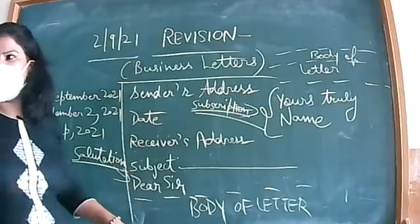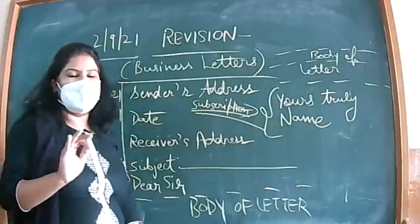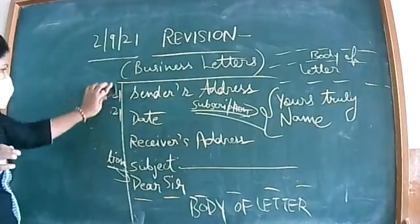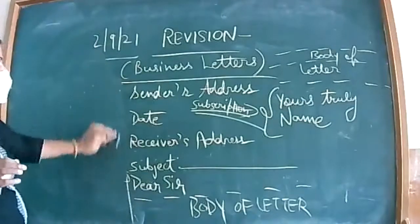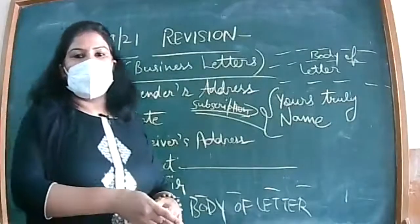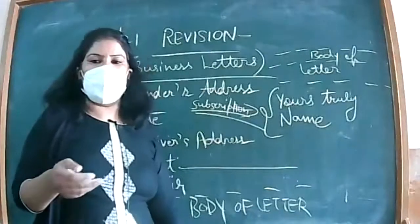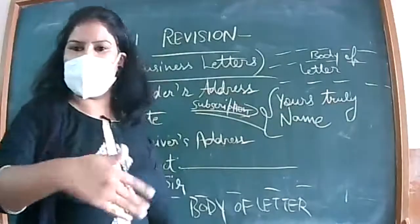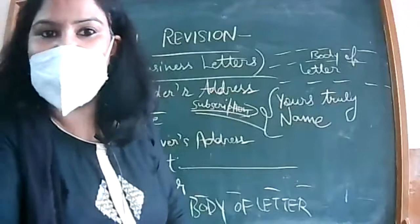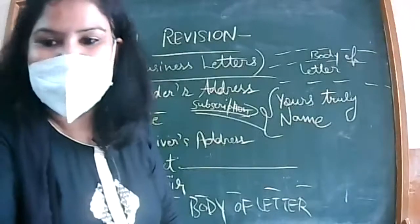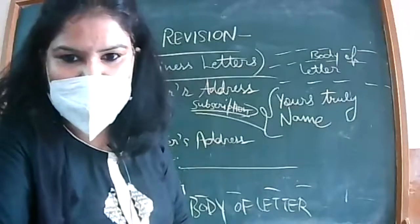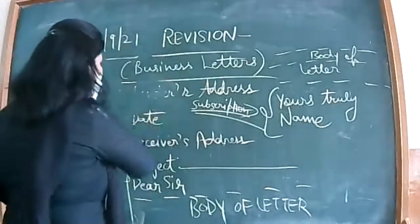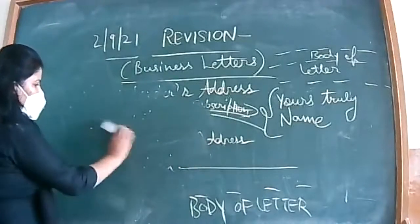Determiners ka proper lecture was discussed when there was joint class with plus one C. Remember? And because we have three periods only - today, tomorrow, and the next day - you can tell me, beta, in which chapter you are facing problem. We have landscape of the soul, we have photograph, we have laburnum top and summer of beautiful white horse. So aapko kis chapter mein problem ha rahi hai. Online children, kindly type in the chat box or you can raise your hand.